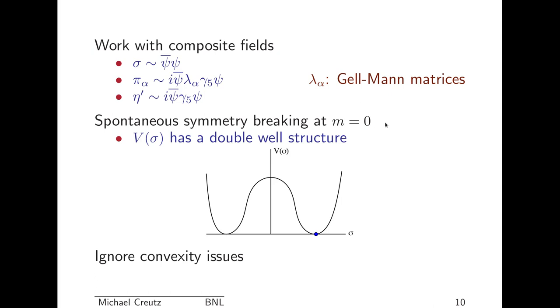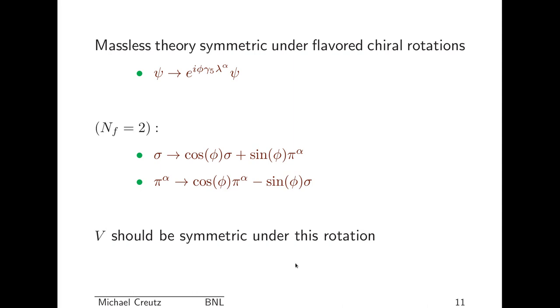We start off with the idea that there's a spontaneous symmetry breaking when the quarks are massless. In other words, this V as a function of the sigma field has a double-well structure. Now, for this purpose, I'm going to ignore convexity issues. It turns out, when you formally define an effective potential, it has to be a convex function. And the reason is, if you try to hold the field somewhere in the middle here, the vacuum will just split up into part of it in this minimum, part of it in that minimum. So, formally, this should be flat. But we're all used to this in discussions of the Higgs. So, I'm going to ignore that issue as understood.